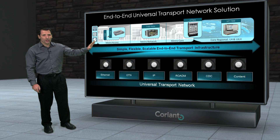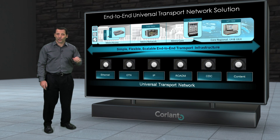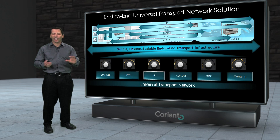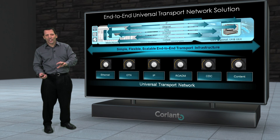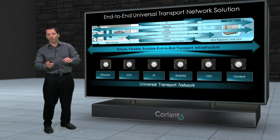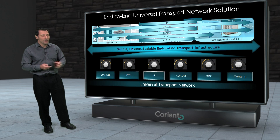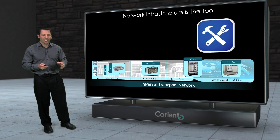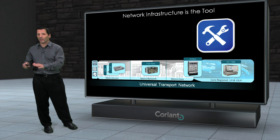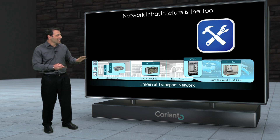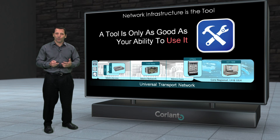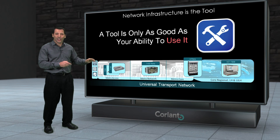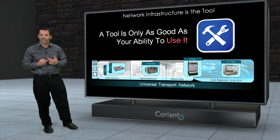If you remember from previous videos, we took a closer look at this universal transport infrastructure that Coriant can provide. This is an infrastructure where you can dial in exactly the kind of functionality you want all the way through the network, and then change and adapt the way the network is managing traffic over time flexibly. But this is the infrastructure itself — infrastructures are really just tools. This is the tool that the service provider can then use to provide their services. And today what we have is tools — these network infrastructures — that are run by these management systems, these NMSs provided by the vendors.